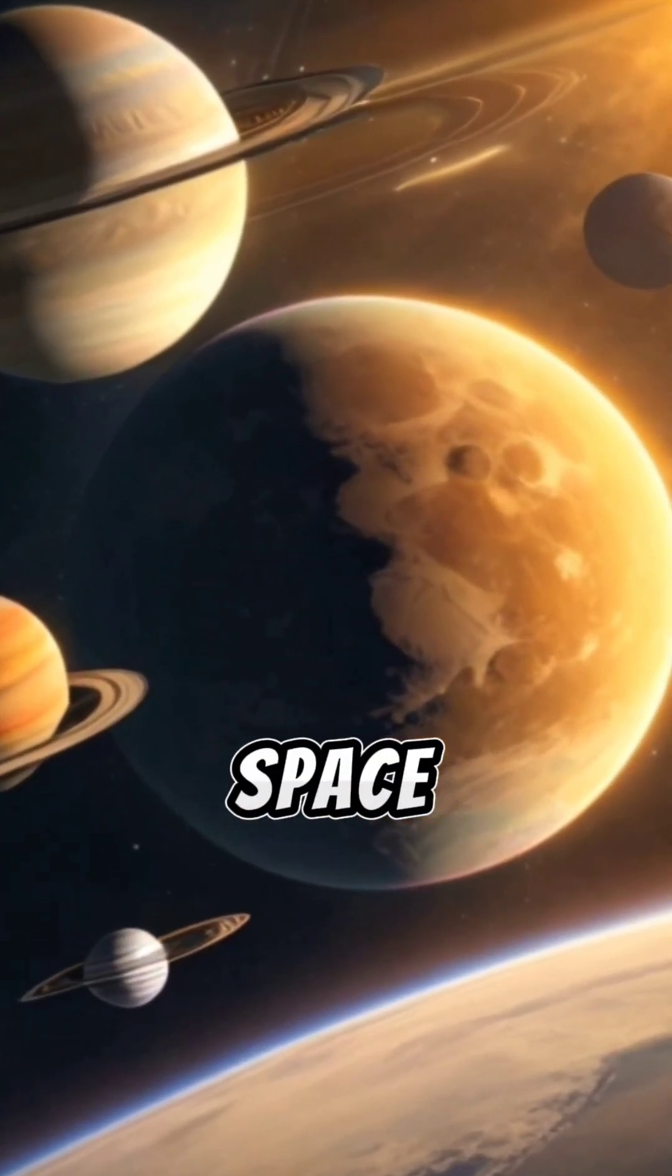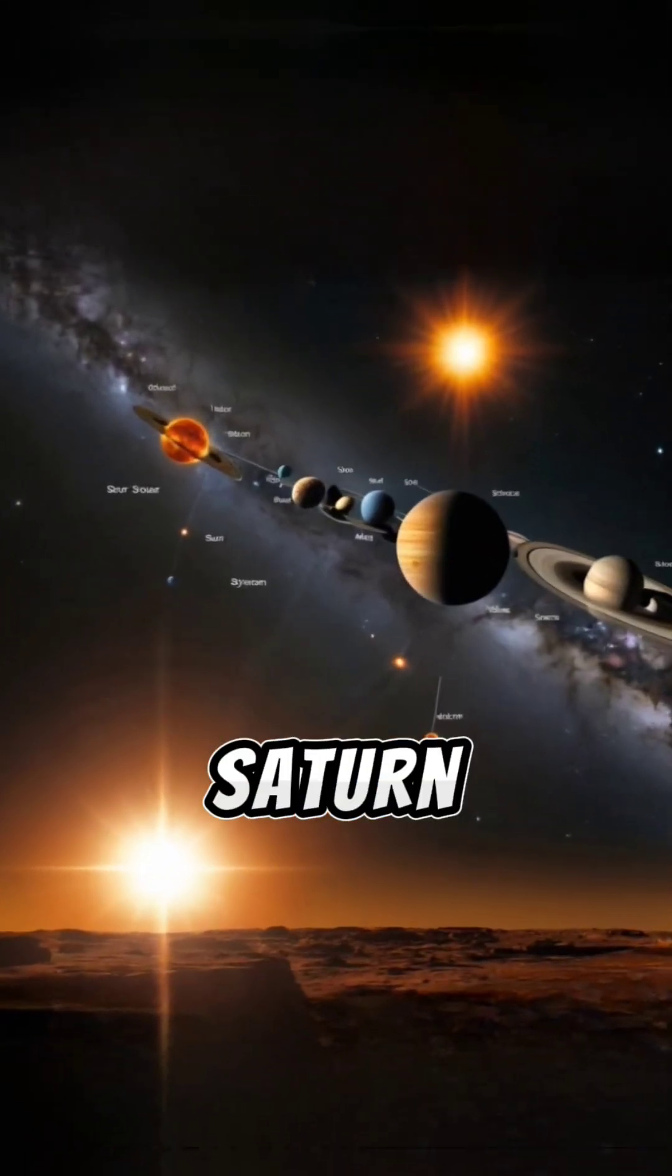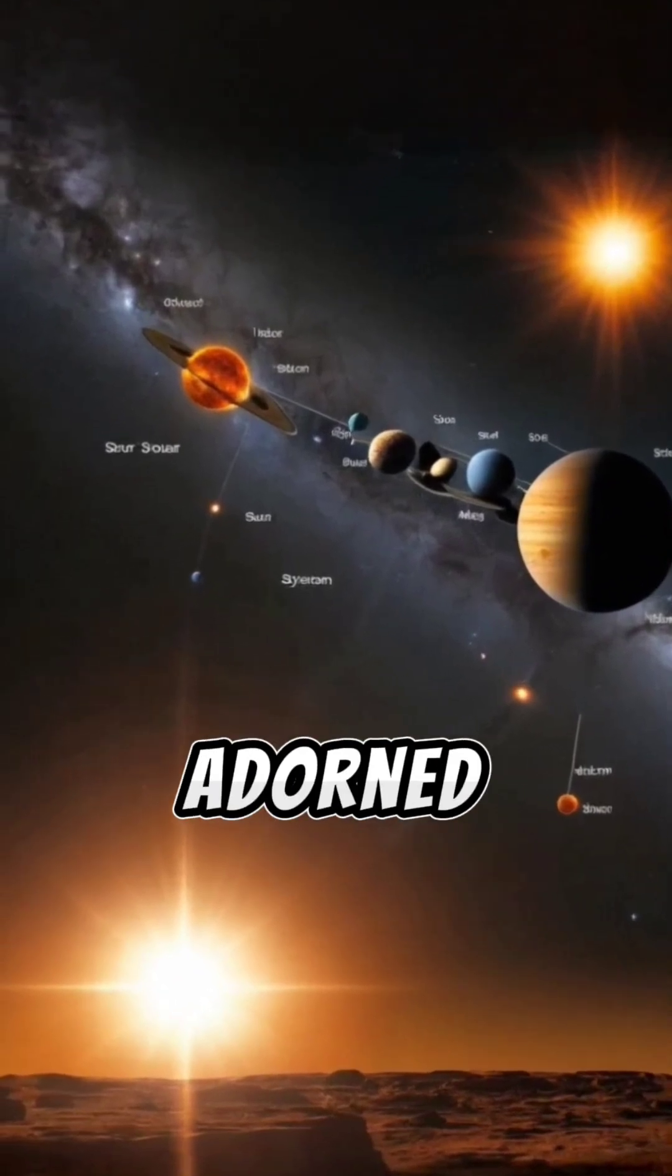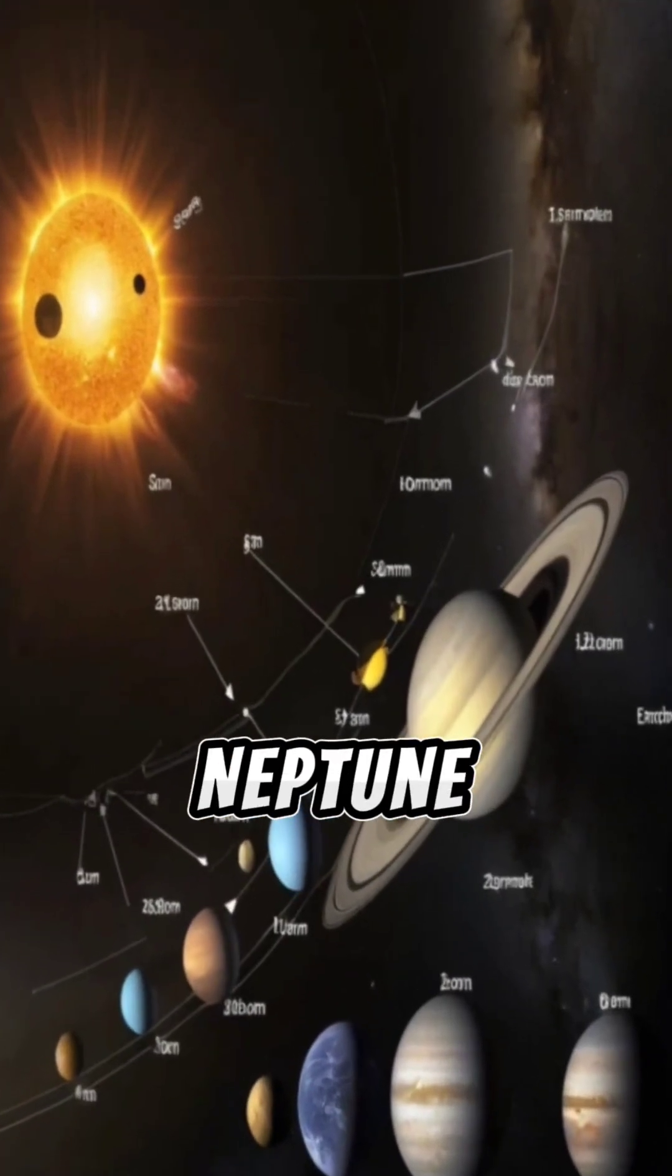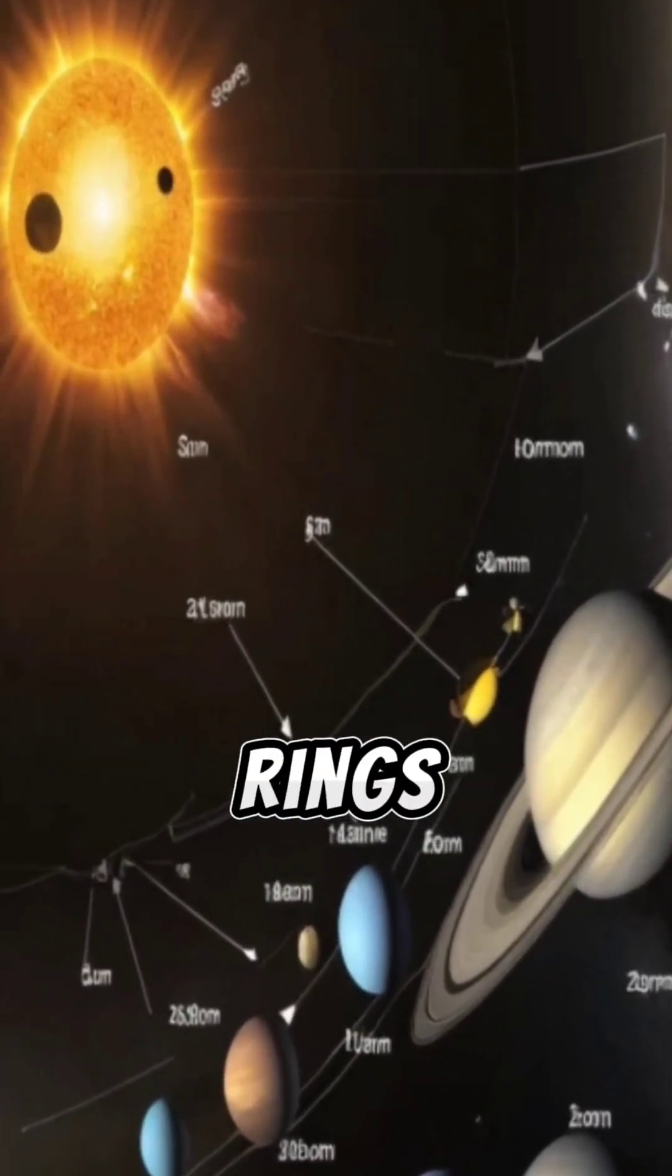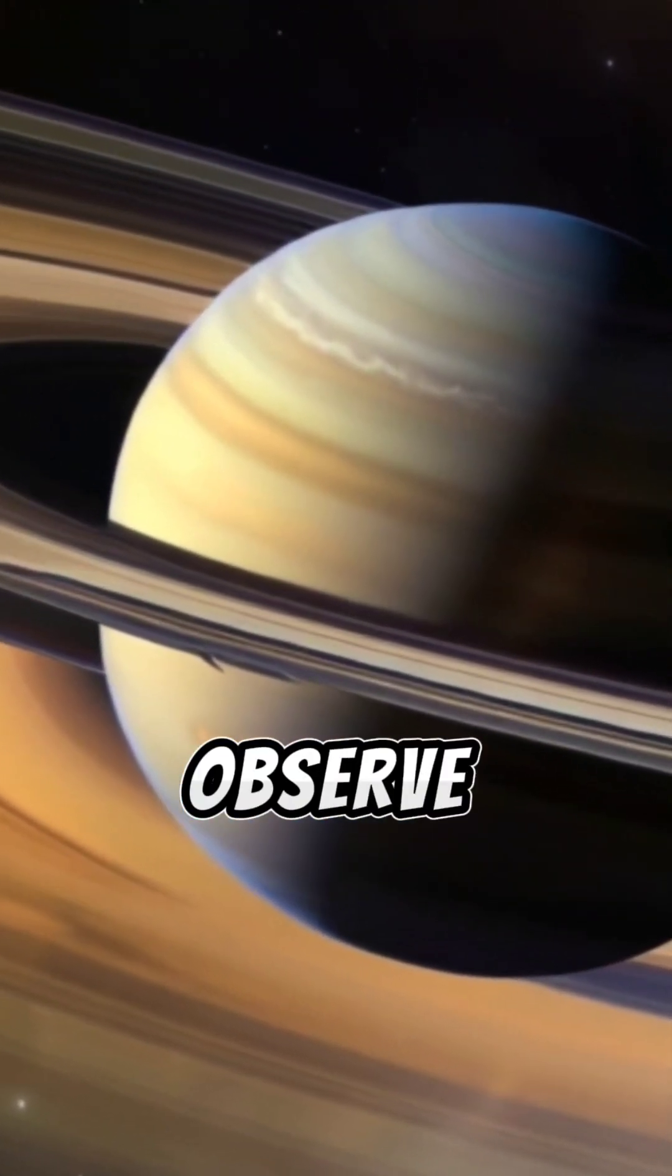Five fascinating facts about space. 1. Saturn isn't the sole planet adorned with rings. Uranus, Neptune, and Jupiter also boast rings, though they are diminutive and challenging to observe.